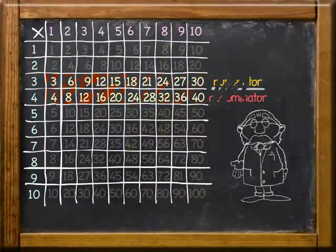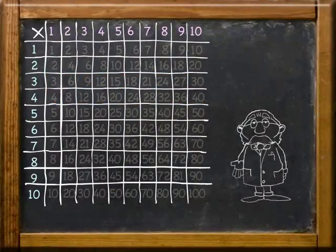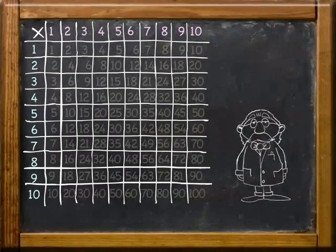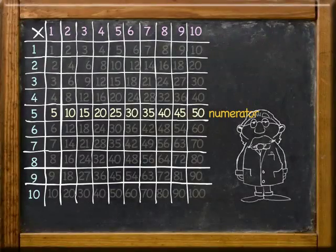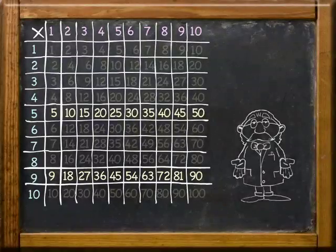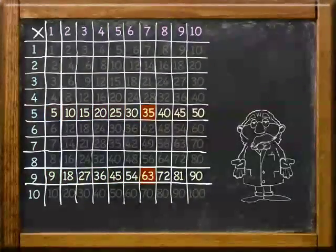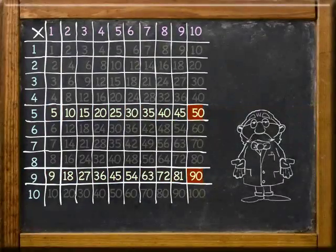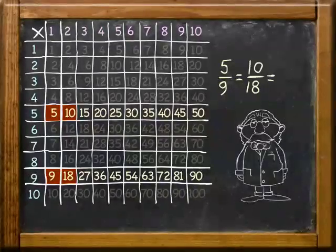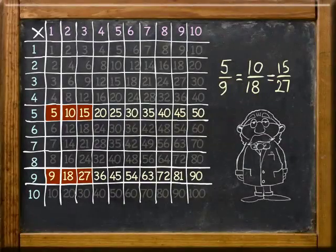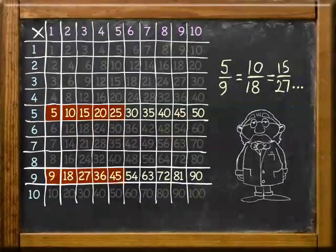Also, you don't have to pick rows next to each other in order for this to work. For example, select row 5 as the numerator and row 9 as the denominator. You'll see as you move across the columns the resulting equivalent fractions. 5 ninths is equal to 10 eighteenths, and 15 twenty sevenths, and so on across the columns.